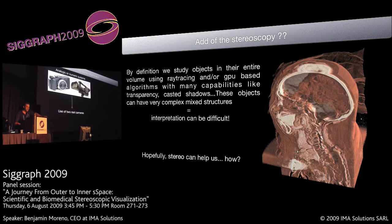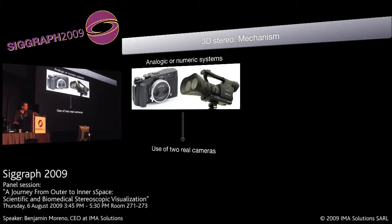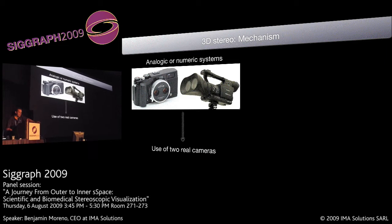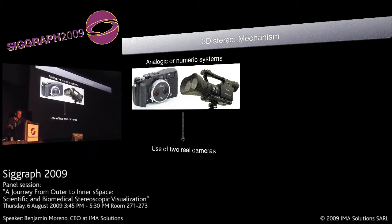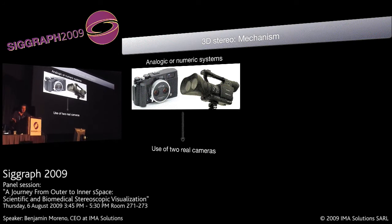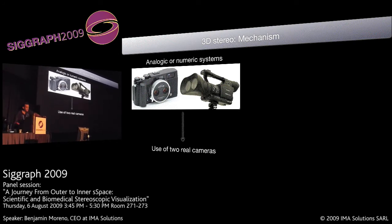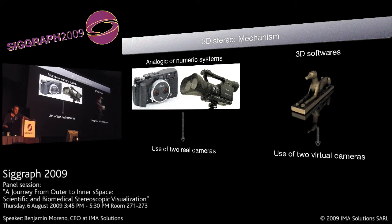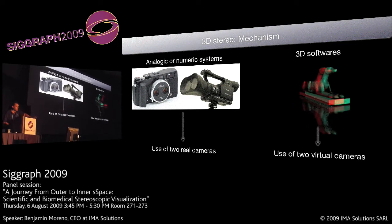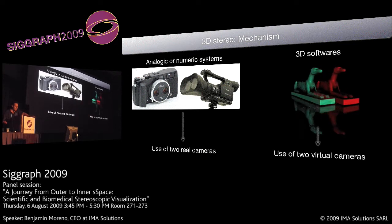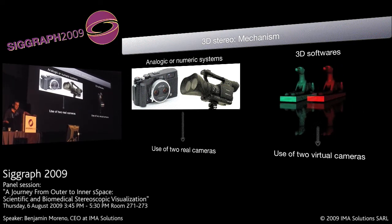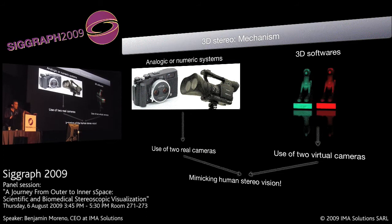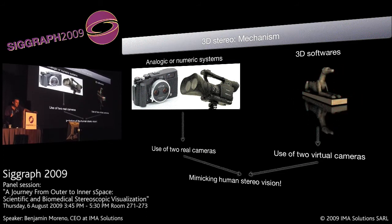To be quick, you have the analogic and numeric systems, which use two real cameras. These systems were invented at the same time as cinema, so that's not a new technology. And right now, since years, you can use two virtual cameras to create stereo content from 3D software. The goal of both kinds of techniques is, of course, to mimic the binocular vision of humans.